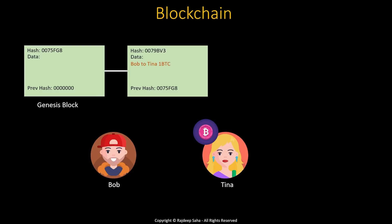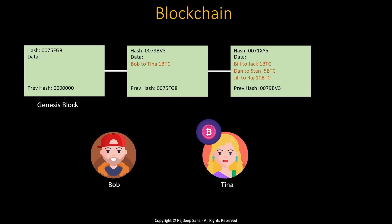Once this hash number is set for a block, if anything changes in the block — data, previous hash, or any other fields — the hash will change. One thing to note is that each hash should have a predefined format. For example, for this blockchain, each hash must start with 007. In reality, each block does not just have one transaction; one block will have multiple transaction entries. You can see the previous hash for this block refers to the previous block, and this block has its own unique hash that also starts with 007.